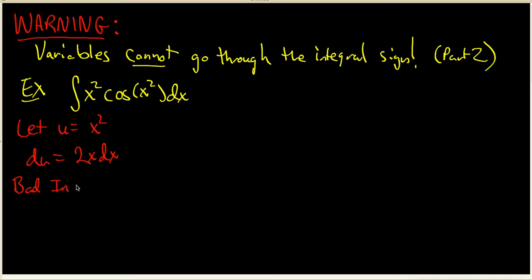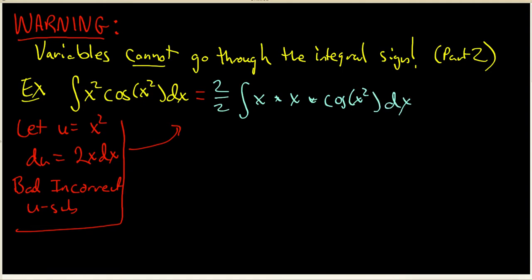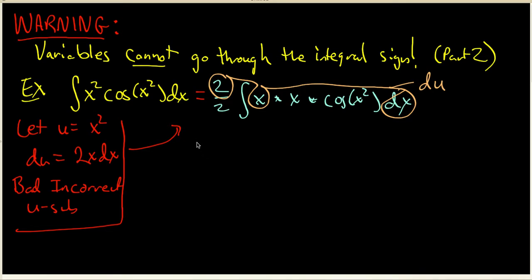So they're going to make the following bad, incorrect u-substitution. They're going to take this information and write that this integral is going to be 2 over 2 times the integral of x times x times cosine of x squared dx. Then they think: here's the 2, here's an x, and there's a dx — and those go together to form a du. So the integral is now one half times the integral of x times cosine of u du.